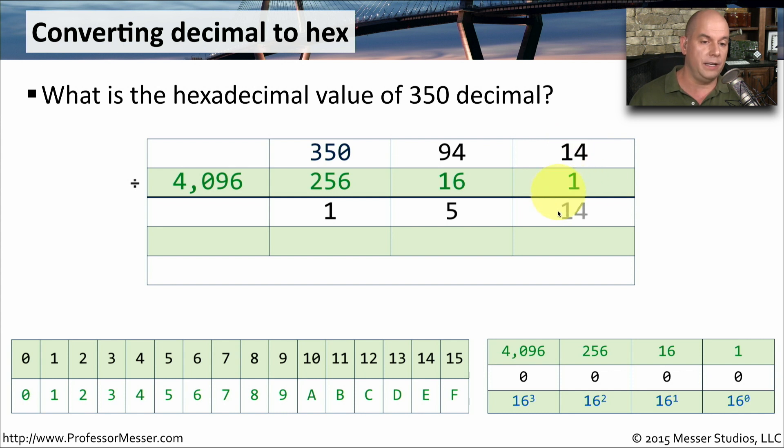Now if we do our conversion, 1 decimal is 1 hex, 5 decimal is also 5 in hexadecimal, and 14 decimal is E in hexadecimal. And that means that the hexadecimal value of 350 decimal is 0x15E.